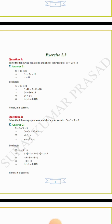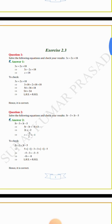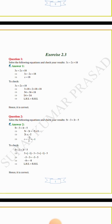Question number 1: solve the following equations and check your results. 3x is equal to 2x plus 18. First we have to find the value of x. We send 2x to the LHS, then it becomes minus 2x. So 3x minus 2x is equal to 18, then x is equal to 18.